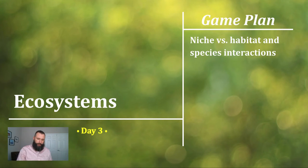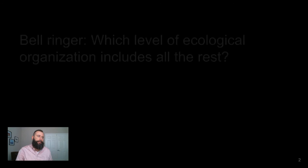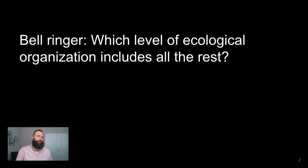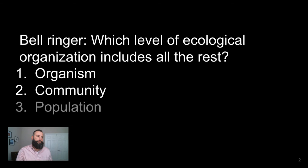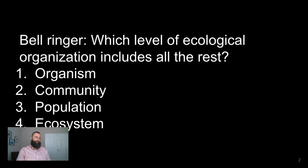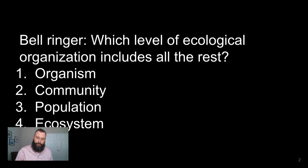Today we're going to delve further into ecosystems. We'll talk about niche and habitat, and then we'll finish with species interactions. Here's a bell ringer: which level of ecological organization includes all the rest? The correct answer is four — ecosystems are the most broad, made up of communities of populations of individual organisms.